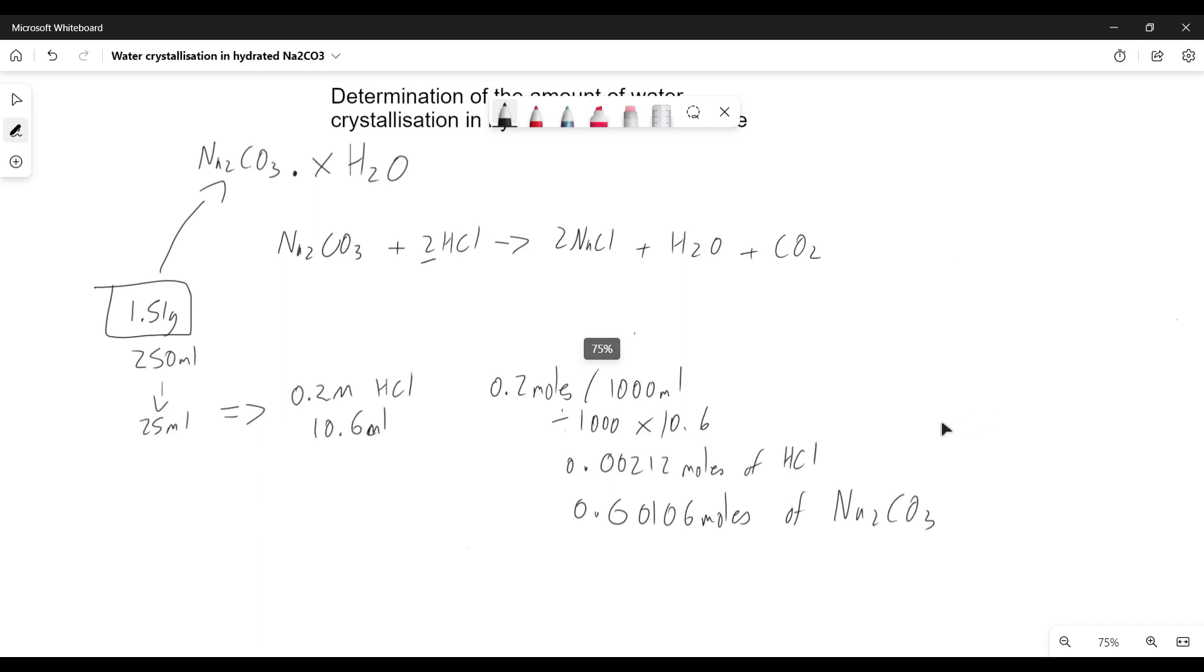We have how many moles were involved in the reaction, but remember how much volume was involved in the reaction - that's in 25 mils. We want to find out how much we have overall at the start, which was in 250 mils. So we can times this by 10, and we'll get 0.0106 moles.